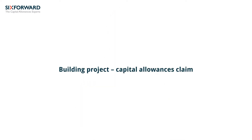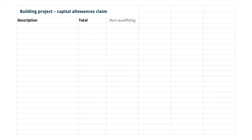A capital allowances claim will typically be prepared by creating a spreadsheet with at least five columns. These will include a description of the expenditure in question, the total cost, the non-qualifying elements — and there will always be some of those — the parts that qualify as standard rate expenditure, and the costs qualifying as special rate expenditure, mainly integral features.